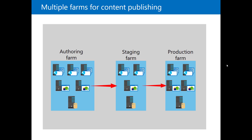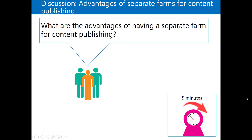End users will then start to use it. That's basically one of the most common models in big organizations — at least three environments or three farms: one for development, one for staging, and the last one for production. You can discuss the advantages of having a separate farm for content publishing with your stakeholders and SharePoint team. Feel free to put any comments or questions below — I'm happy to answer. Thank you for watching.